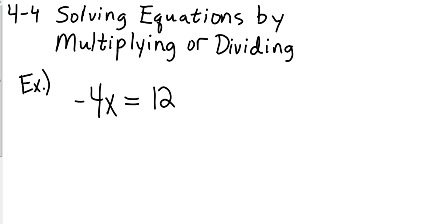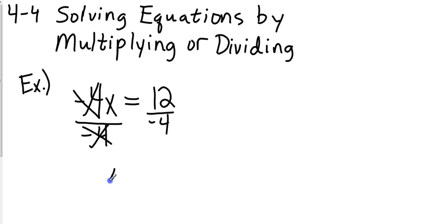My second step is to do the opposite operation to both sides. The opposite of multiplication is division. So I'm just going to make a fraction, and I'm going to divide both sides by negative 4. The negative 4s will cancel each other, and on the right side we have 12 divided by negative 4, which gives us negative 3.